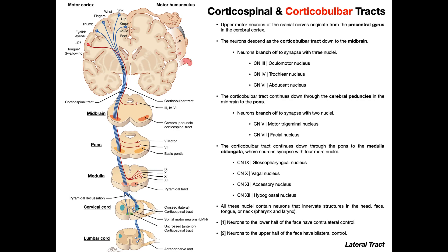As the upper motor neurons exit the motor cortex and descend downward, those upper motor neurons are going to travel with those of the corticospinal tract, shown here in blue. They're going to be right next to them, following pretty much the same path — descending down through the thalamus and ultimately into the brain stem. Remember the brain stem has three components from superior to inferior: a midbrain, a pons, and a medulla oblongata. In general we're not going to have to worry about the spinal cord for the corticobulbar tracts.